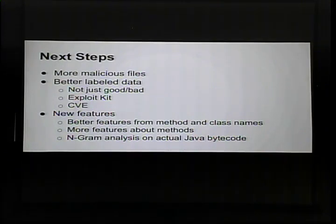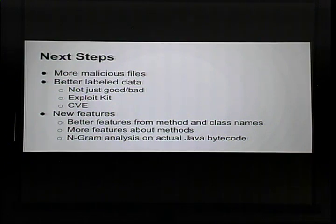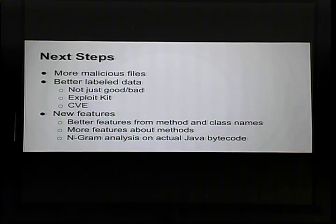To sum up the Java section: we can detect malicious files using data science, though we still need more work. Next steps include more malicious files, better labeled data, more sophisticated labels like exploit kit or CVE number, extracting more features from the file itself — more information about method and class names, maybe actual bytecode analysis or n-gram analysis. There's lots still to do.